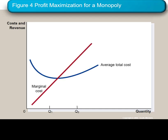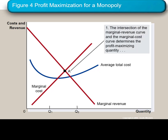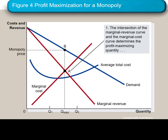Here's a graph — notice we have the intersection of marginal revenue and marginal cost. That, independent of the demand curve, is going to determine the quantity that maximizes the profits of the monopolist. The intersection labeled as A is the one you're going to look for if you're solving a problem, as that's going to maximize the profits.